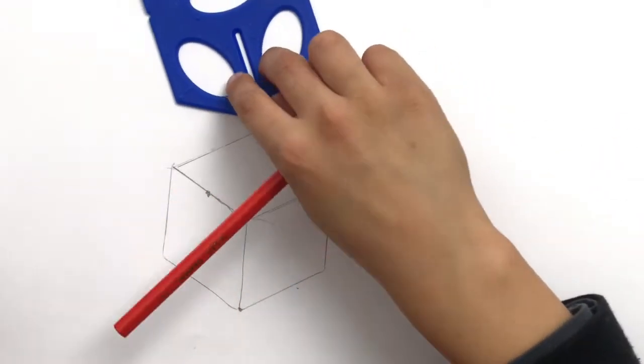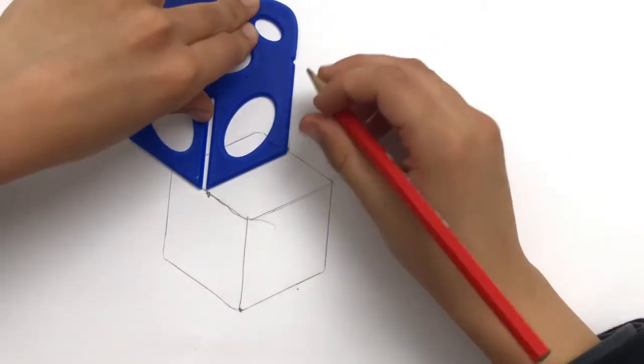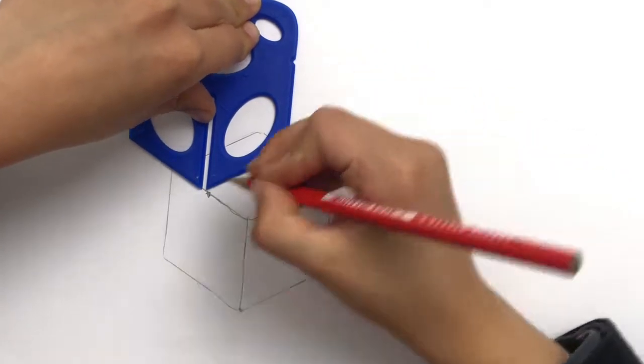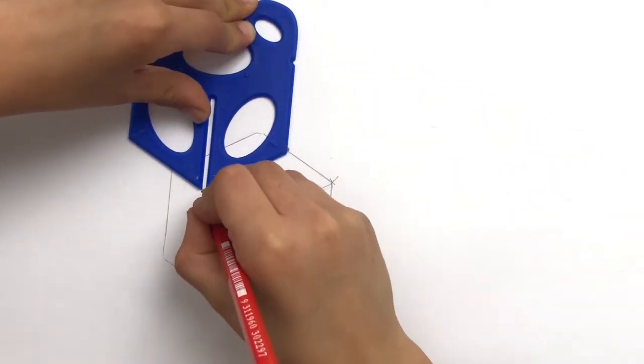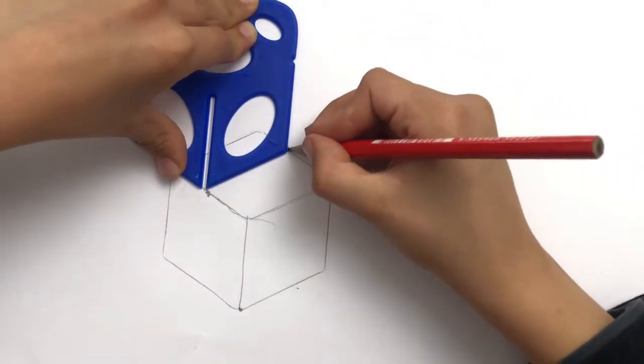Now it's time for Charles to draw in the roof. He's going to position the splat on those two dots and he's using the edge and the center splat to draw two vertical or straight up and down lines. One, two.